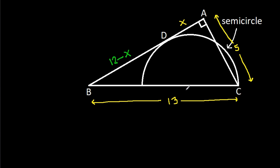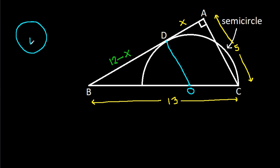Now, suppose the center of the semicircle is O, and if we join OD, then in any circle, the radius and tangent are perpendicular to each other. So this angle will be 90 degrees, and OD will be the radius. Suppose OD equals R.